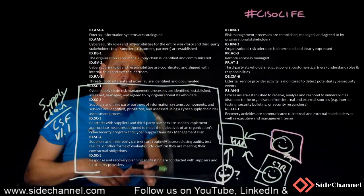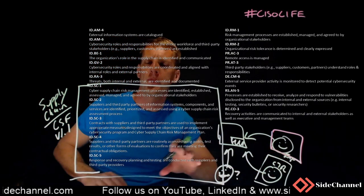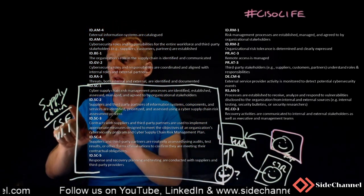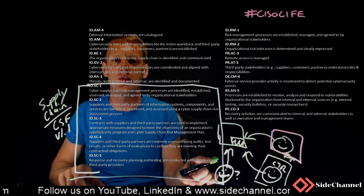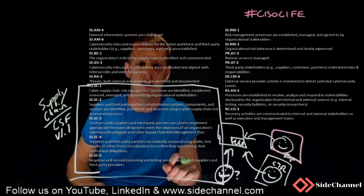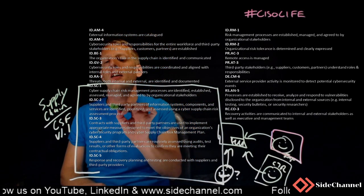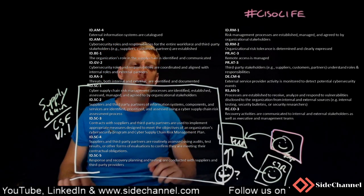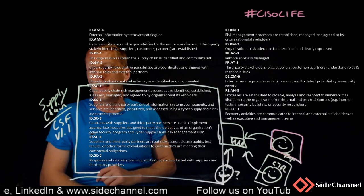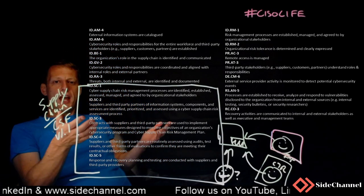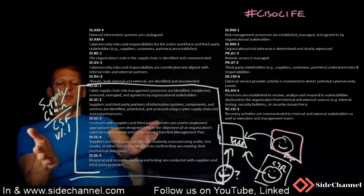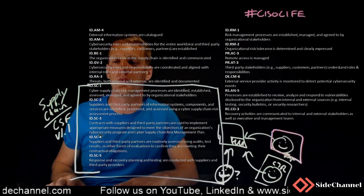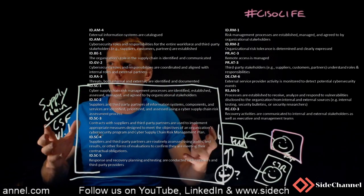Looking at these at first glance, you might think: great, I need to apply these to all my third parties. But what you really need to figure out first is: are you capable of performing any of these functions within your own organization? I wouldn't just jump out and start asking my vendors if they adhere to these controls — I would start with my own organization and ask: do I have the ability to successfully go through these controls and enforce them or create a program around them?